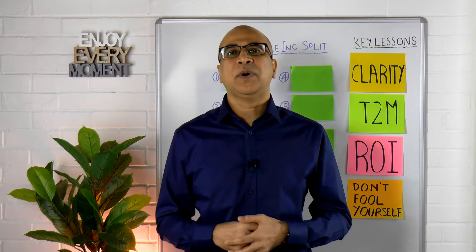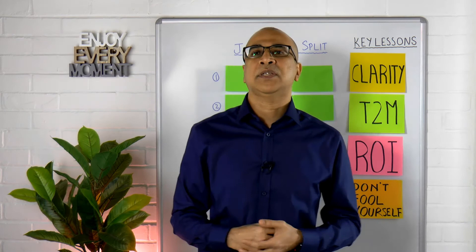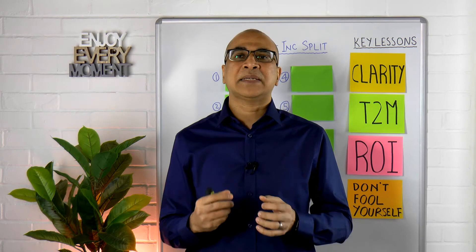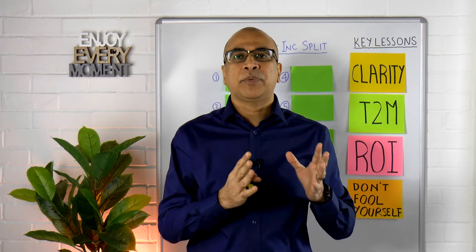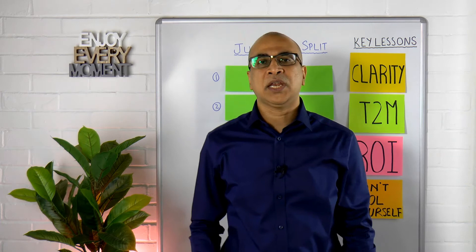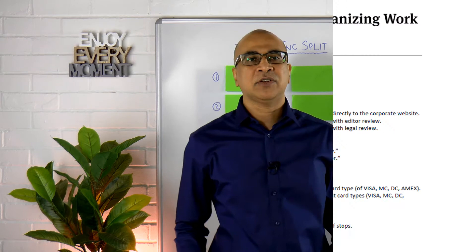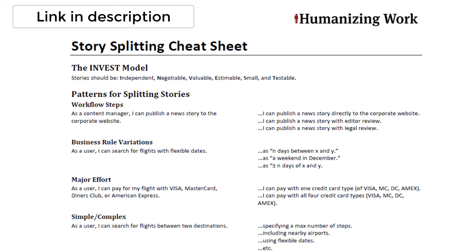So how do we take all of these lessons and start to split up our epics in a way that maximizes and optimizes not just the outcome, but also the approach we use to achieve it? On screen is a very famous story splitting cheat sheet from back in 2009 — it's from Humanizing Work, one of the original story splitting cheat sheets. We'll use our own version for SAFe Agile, but I want to walk you through this original first so you understand the concept.